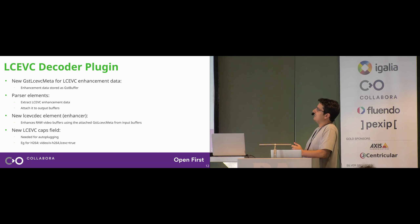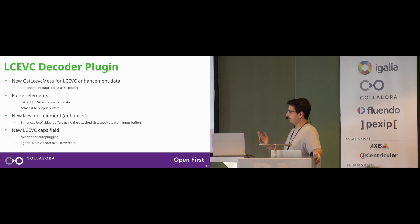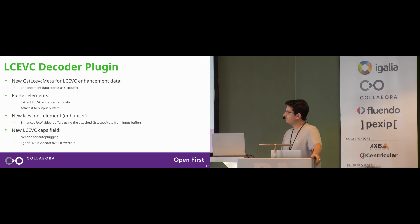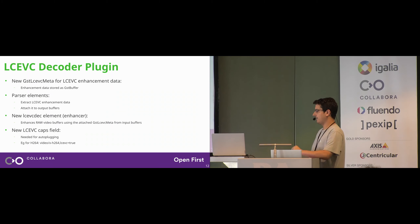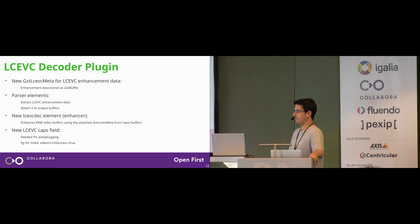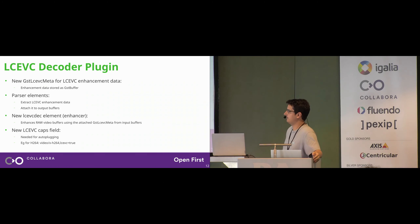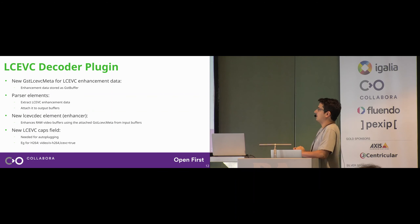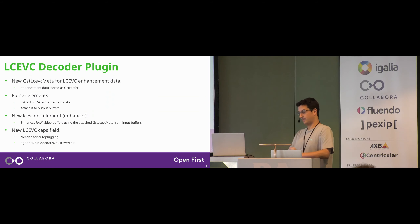There is a new LC-EVC dec element — which is actually the enhancer — the one that enhances the raw video frames. There is also a new caps field, which is needed for auto-plugging to use the LC-EVC decoder only when needed, because we don't want to use it when the video doesn't have enhancement data. For example, the caps for H.264 would look like: video/x-h264, lcevc=true if it has LC-EVC data, or lcevc=false if it doesn't.